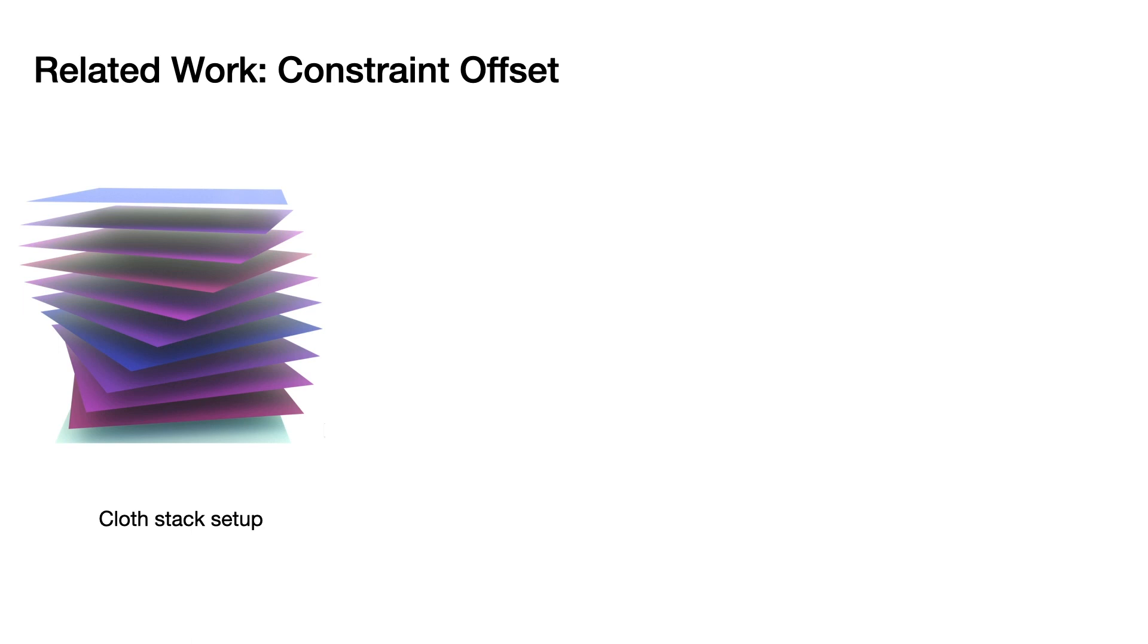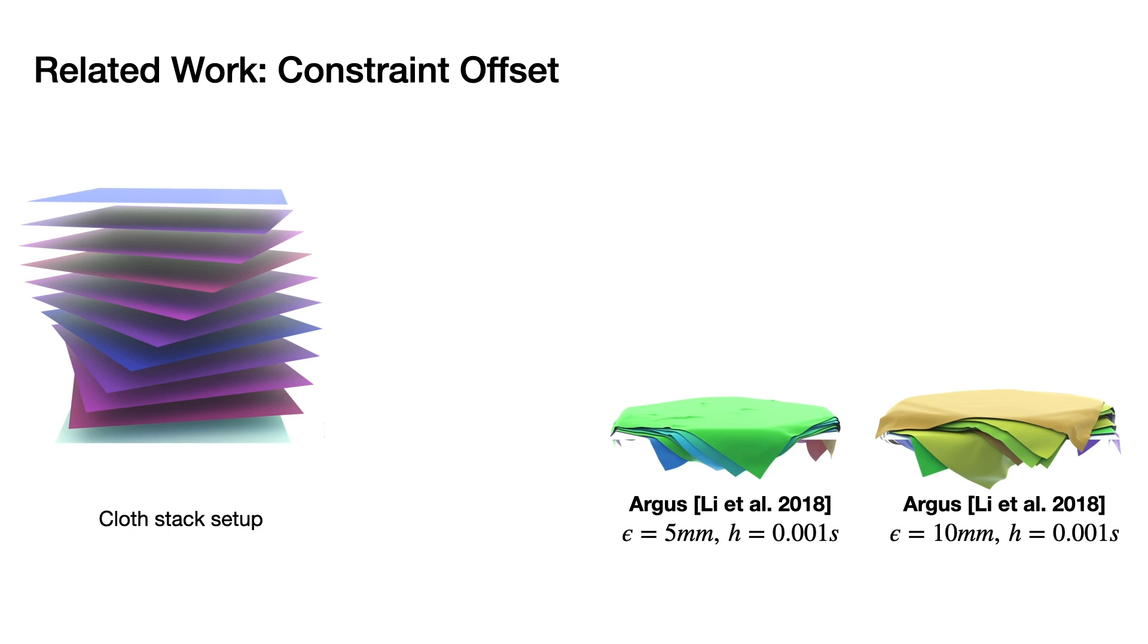If we drop down to small time steps, then we can get simulations with some artifacts. At 10mm thickness we get a fairly reasonable stack. But as we reduce to smaller thicknesses at 5mm it gets worse. Until at 1mm, still well above the thickness of many shirt materials, failures are unacceptable.